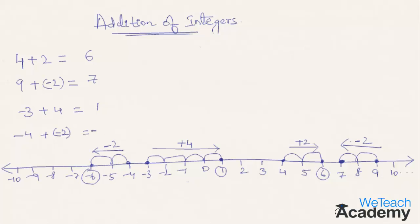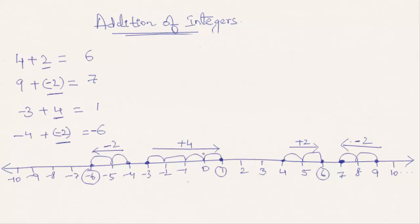When adding negative integers — as shown in the examples with minus 2 and minus 2 — we move towards the left on the number line. When adding positive integers, like number 2 and number 4, we move towards the right. We hope you have understood the concept of addition of integers. In the next video, we are going to teach you about subtraction of integers. Watch more videos on education at vtchacademy.com. Thank you.